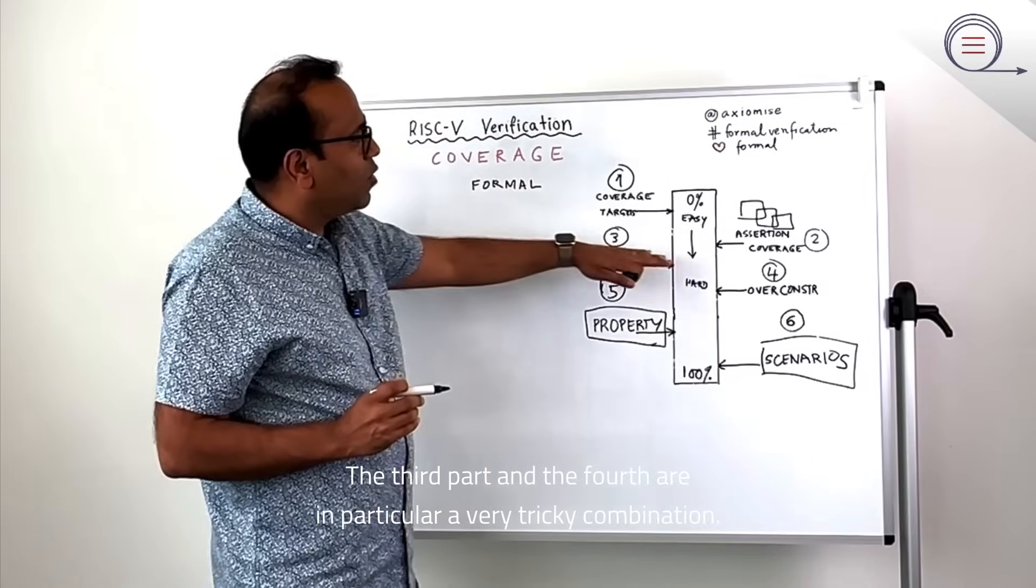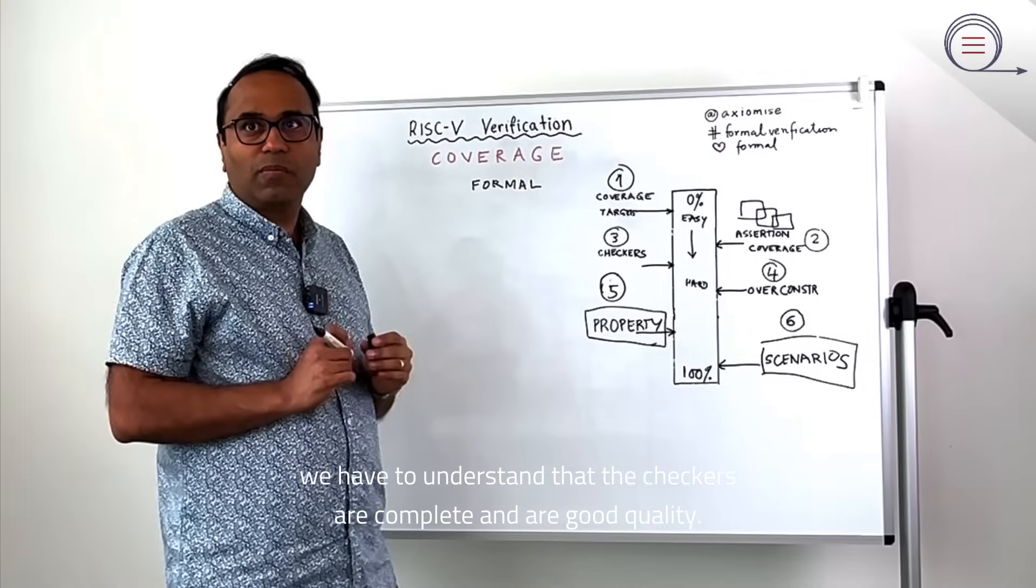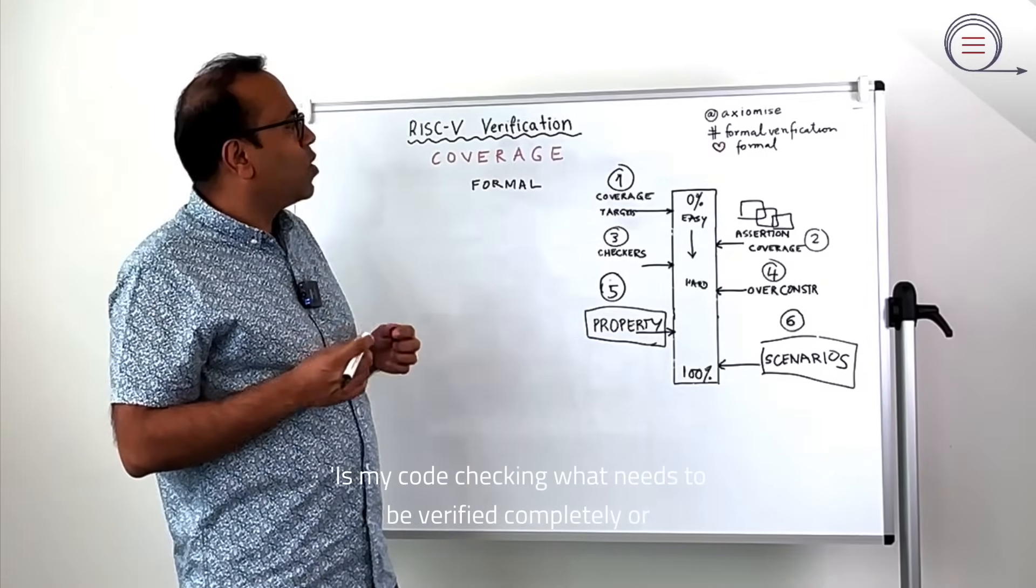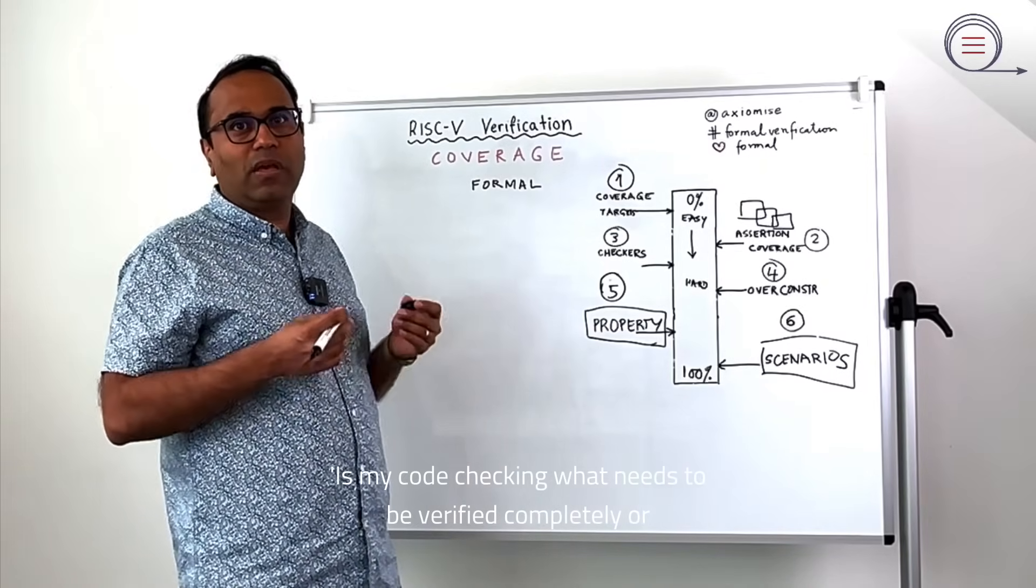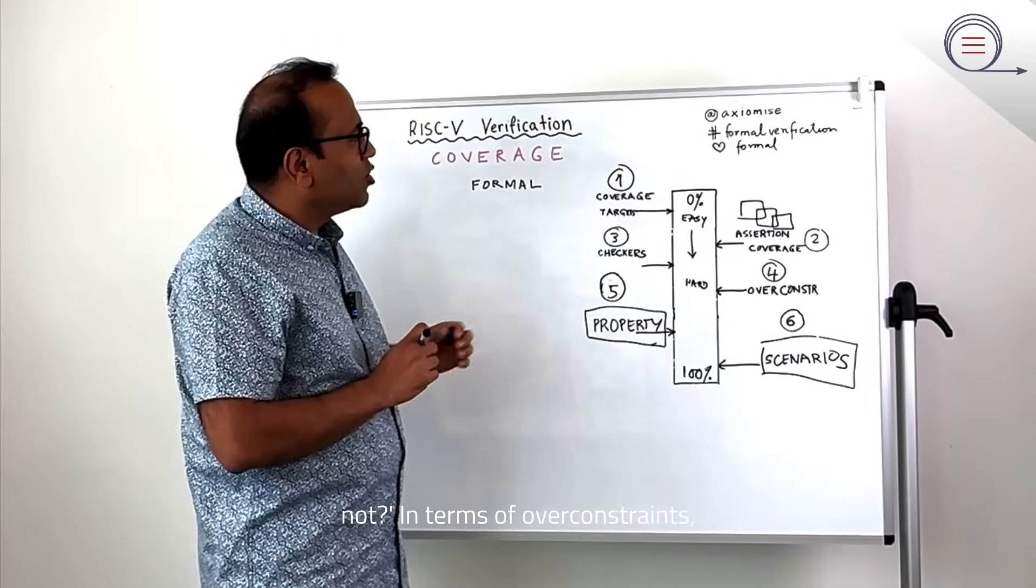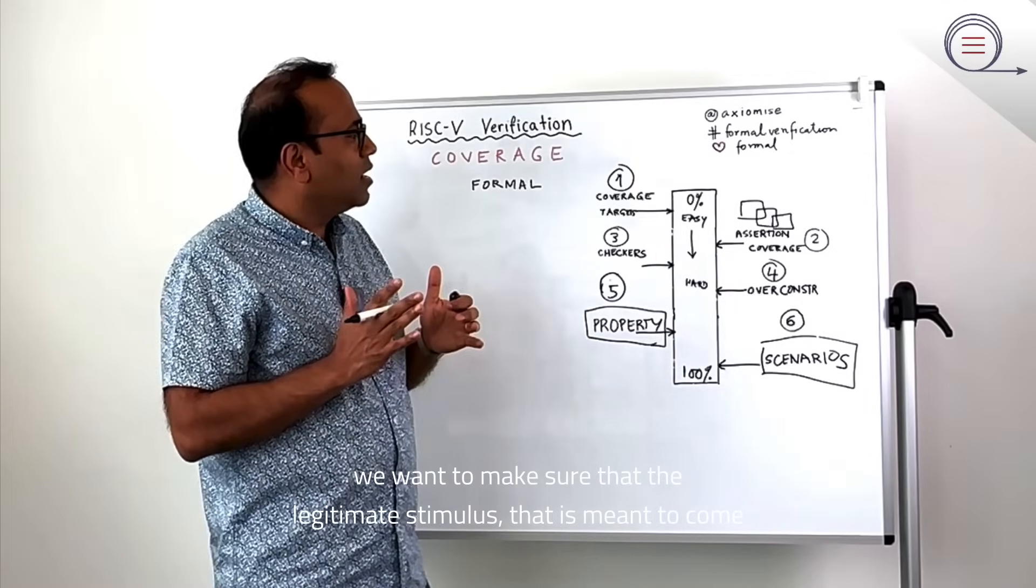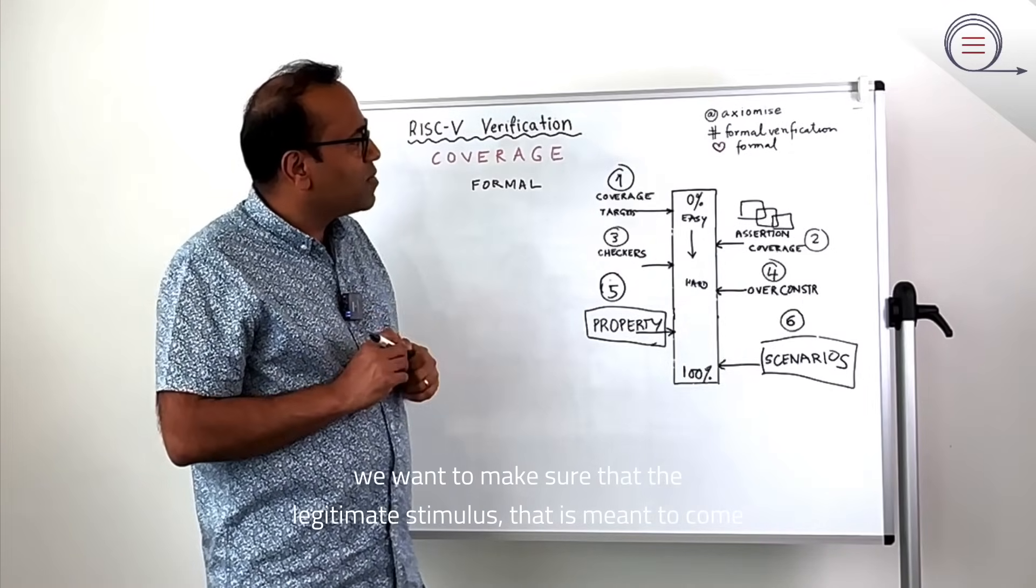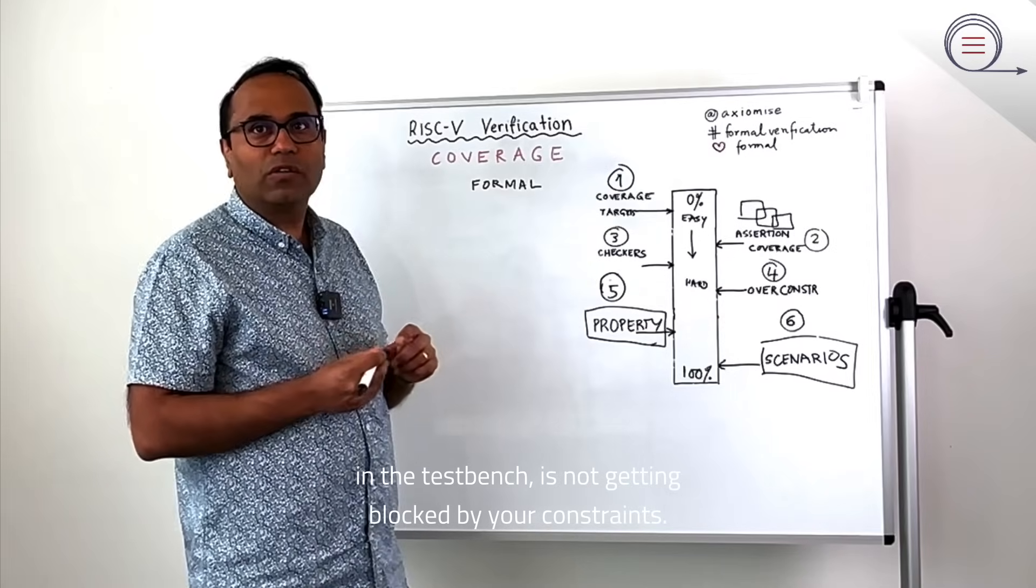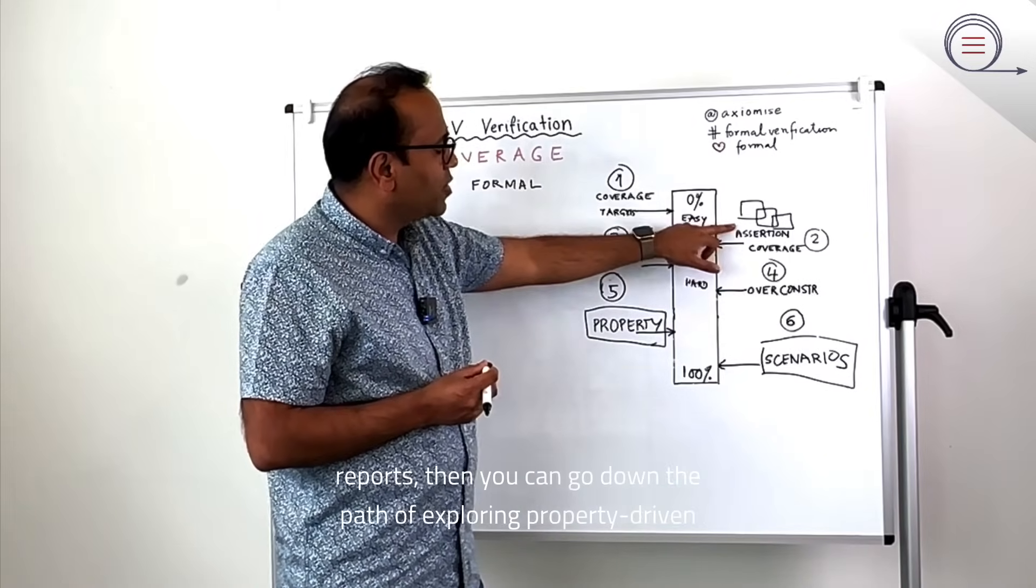The third part and the fourth are in particular a very tricky combination. In formal, we have to understand that the checkers are complete and are good quality. Is my code checking what needs to be verified completely or not? In terms of over constraints, we want to make sure that the legitimate stimulus that is meant to come in the test bench is not getting blocked by your constraints. And if you've done these two correctly and you're getting good assertion coverage reports, then you can go down the path of exploring property driven coverage.